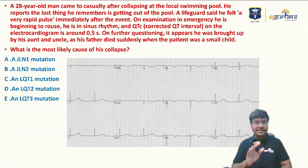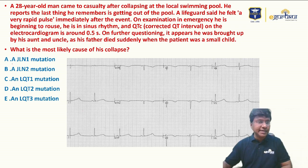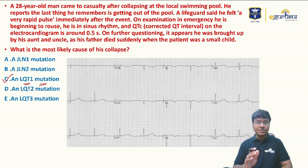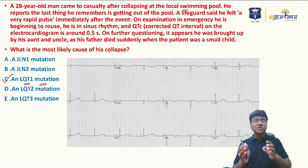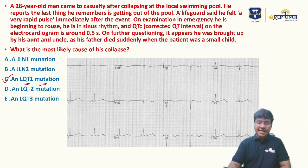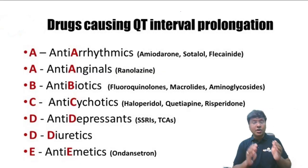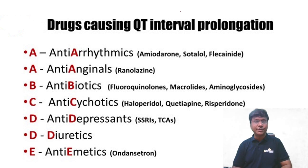The answer to this question is LQT1 mutation — option C — because the triggering event for this patient was swimming, which is characteristic of LQT1. It is also important to note that not only congenital disorders but certain drugs can also cause long QT syndrome.